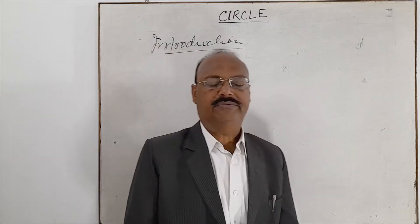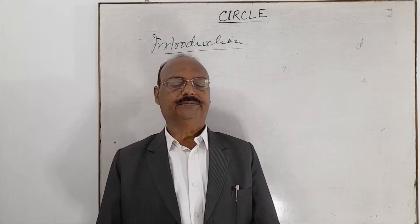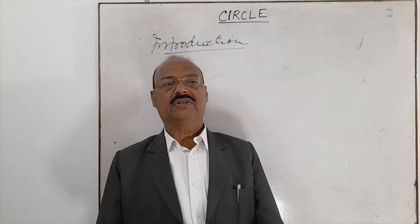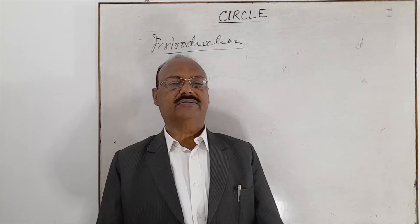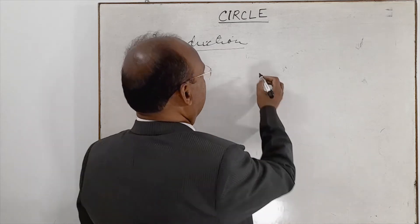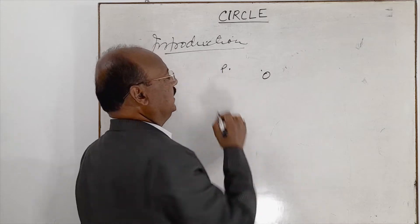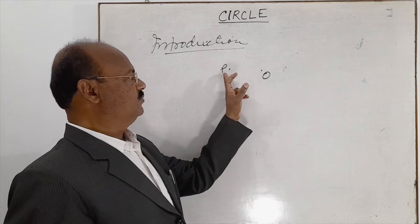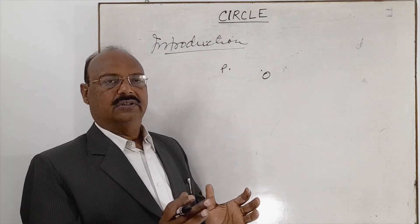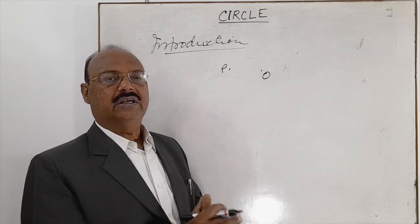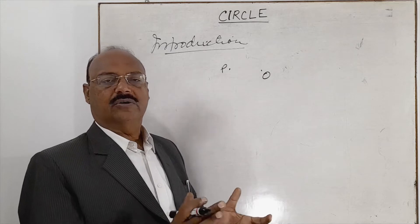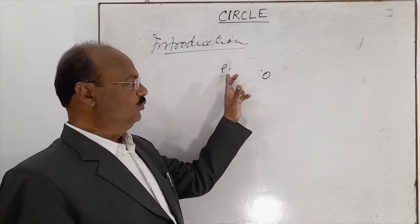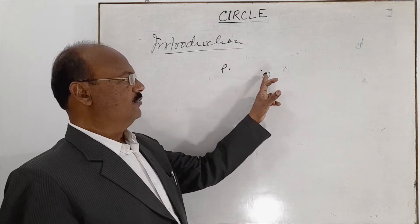First of all, let us try to define circle. Circle is a locus of a movable point P which moves such that it is equidistant from a given point. Suppose the given point is O, and P is any movable point. So the circle is the locus of this movable point. Locus is a path traced out by a point which moves under a certain geometrical condition. So circle is the locus of a movable point P which moves such that it is equidistant from a given point O.